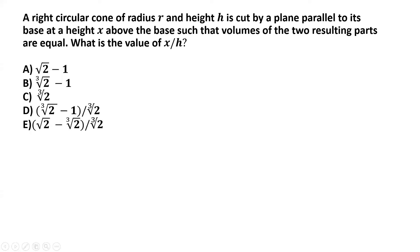A right circular cone of radius r and height h is cut by a plane parallel to its base at a height x above the base, such that the volumes of the two resulting parts are equal. What is the value of x by h?